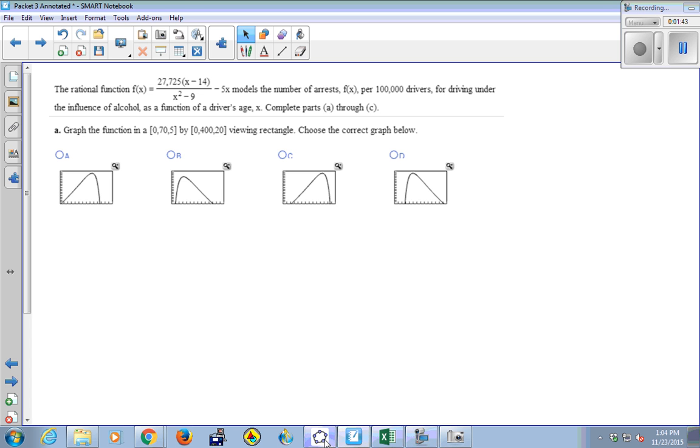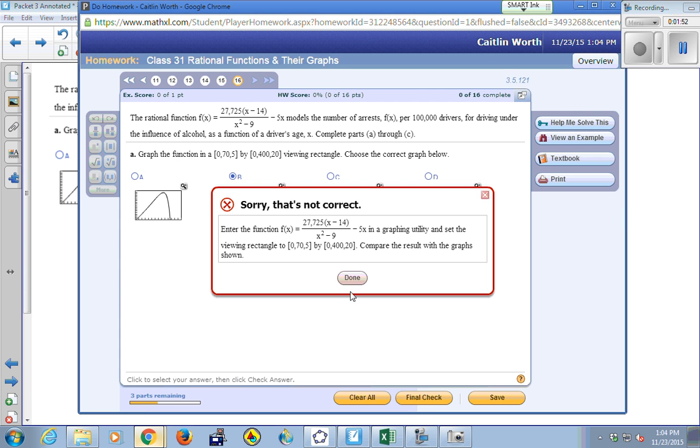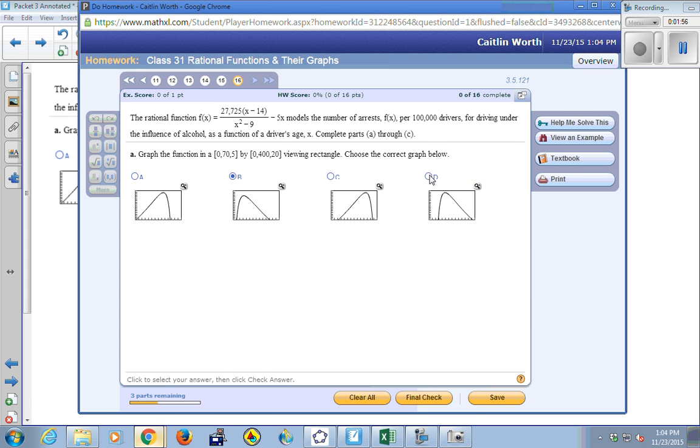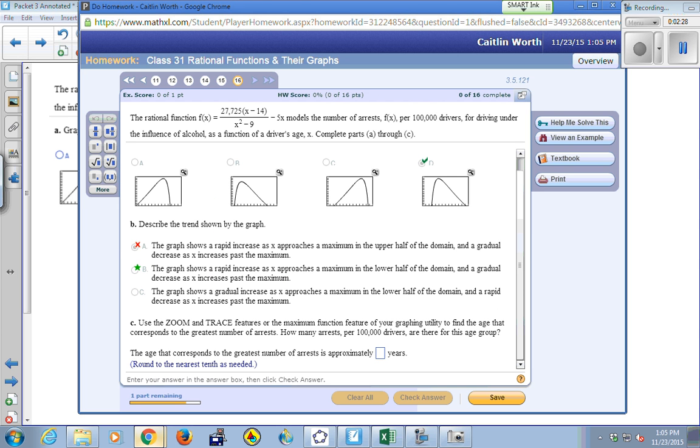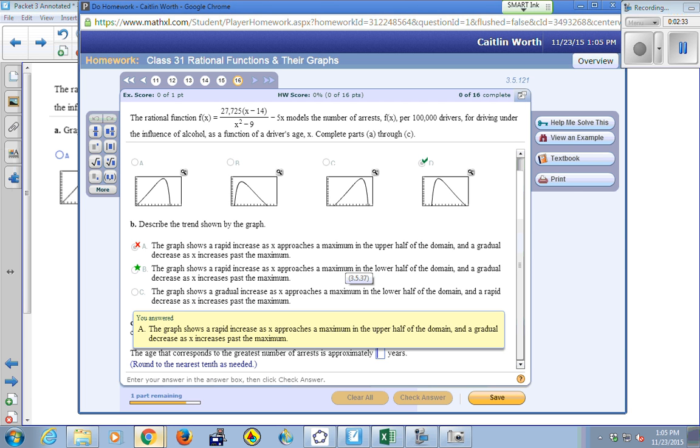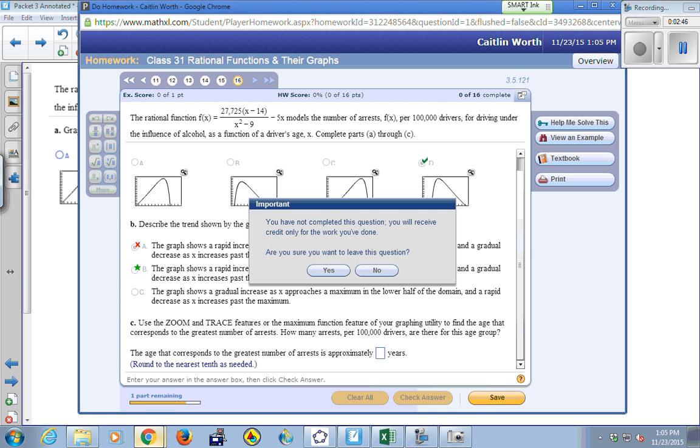All right, so it looks like it's definitely B. So let's go in there and put that in. B. Oh, it's D? What's the, oh, I guess it's where the x-axis is, yeah. Okay, good. All right, so describe the trend shown by the graph. The graph shows a rapid increase as x approaches a maximum in the upper half of the domain and then a gradual decrease as x increases past the maximum. Yeah, I think it's that one. Oh, the lower half of the, oh, okay. How do I get rid of this? Whatever. Yep.